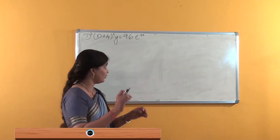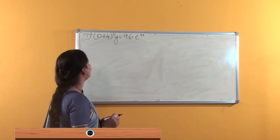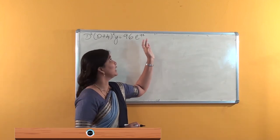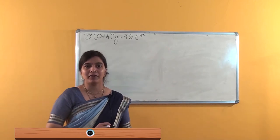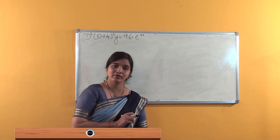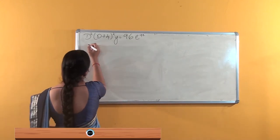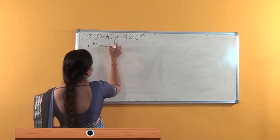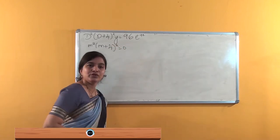Now we are going to solve the problem: D squared into (D plus 4) the whole square into y is equal to 96 e to the power minus 4x. To find the complementary solution, the auxiliary equation is m squared into (m plus 4) the whole square is equal to 0.